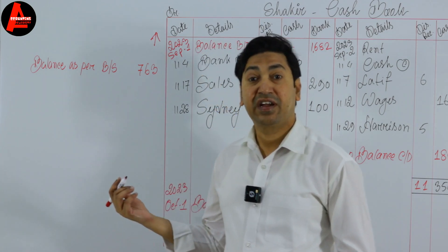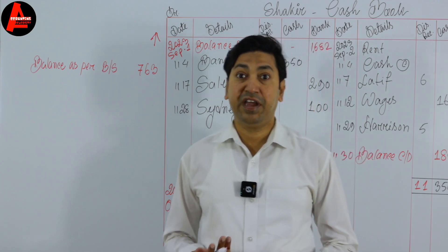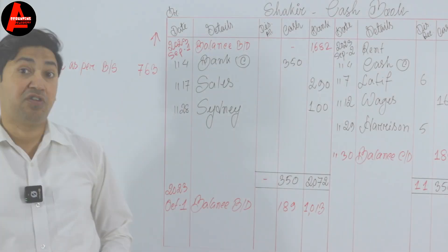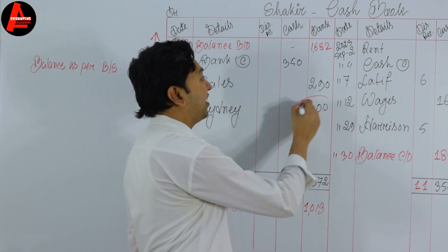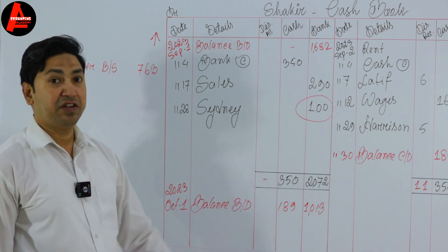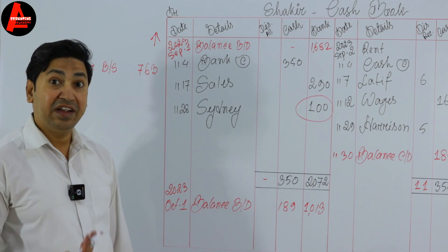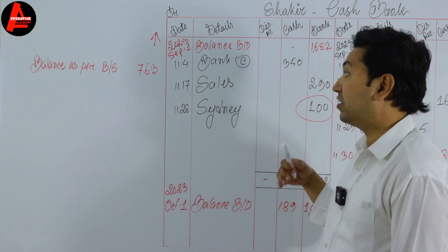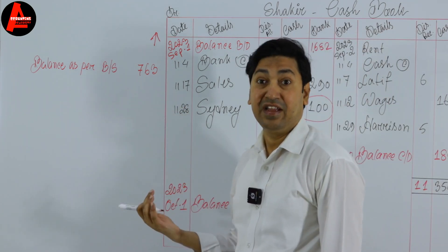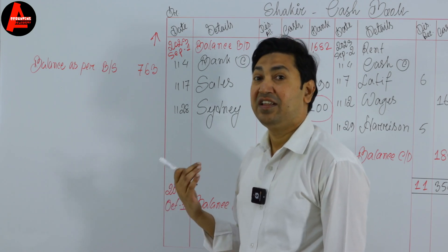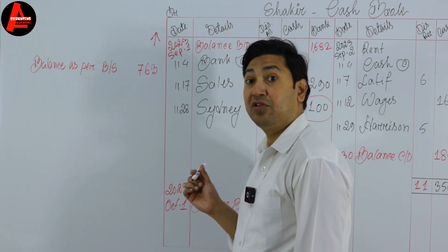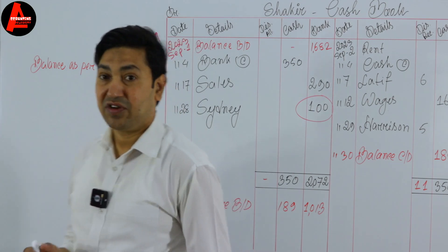What are the errors in the bank statement? The check received from Sydney had not been cleared by the bank. This amount is already recorded in the cash book — in the bank column — but it has not been cleared by the bank yet. That means this amount is still not in the bank. To rectify this balance, we have to add this amount, because today or tomorrow this amount will be received by the bank.